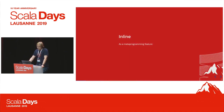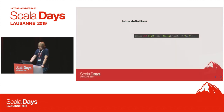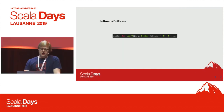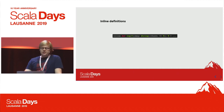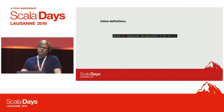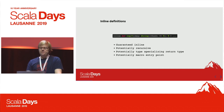First, inline. Inline seems like it's just an optimization — you take some code and put it wherever you're going to call this method. But we're going to see how we can make it do much more. We have this new inline keyword that we can put on a def. In this case we have a log method that will take a message, print it, compute some thunk, print the result, and return that result. Having this inline keyword guarantees that this method will be inlined.